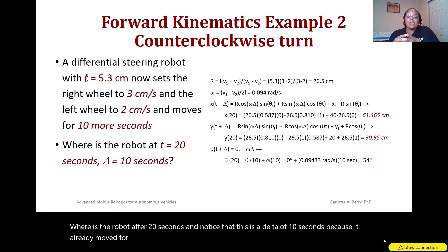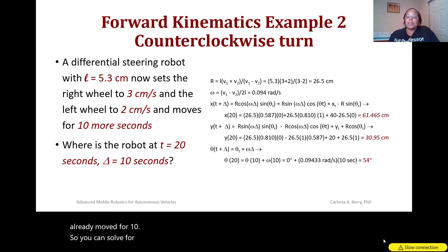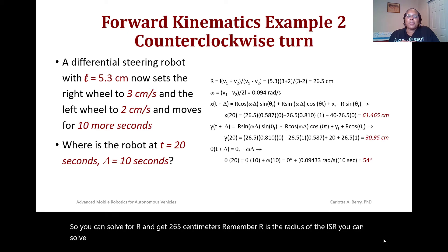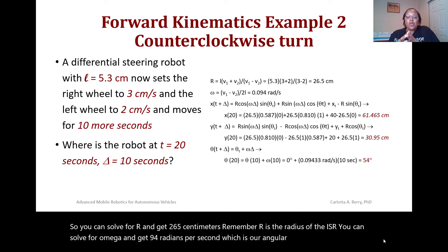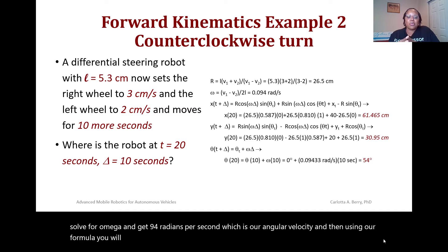Solving for R gives 26.5 cm — remember R is the radius of the ICR. Solving for omega gives 0.094 radians per second, which is the angular velocity. Using the formula, the x-location of the robot after 20 seconds is 61.465 cm.